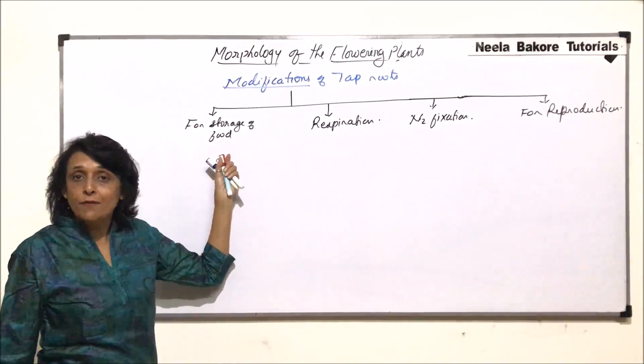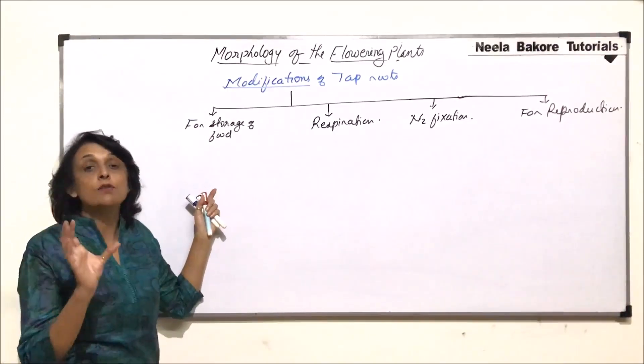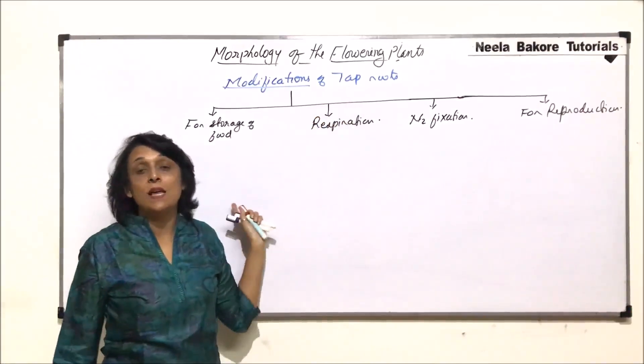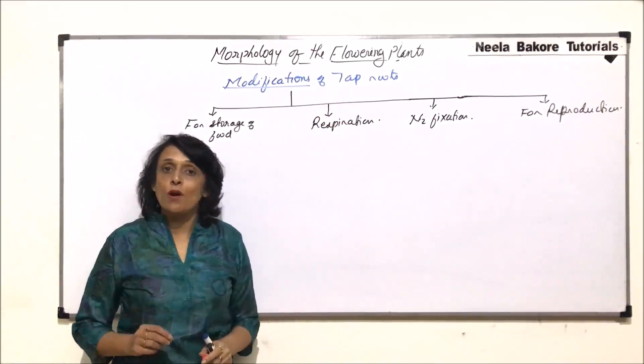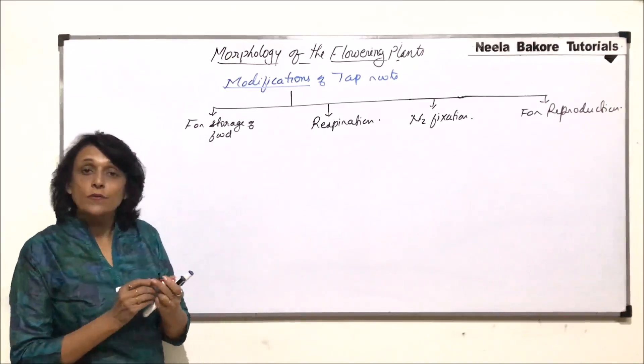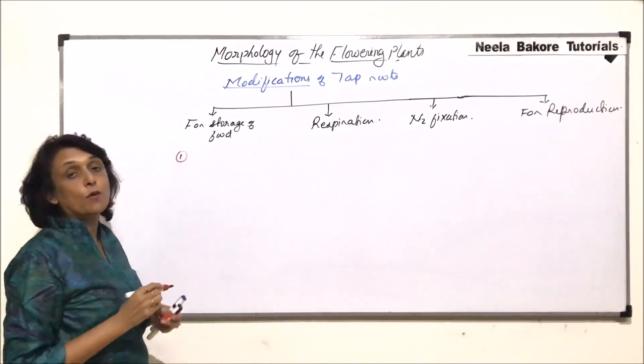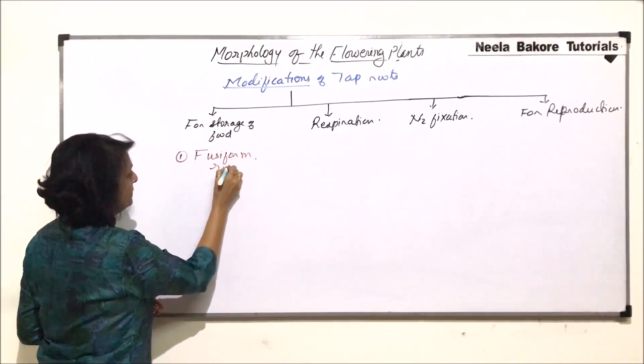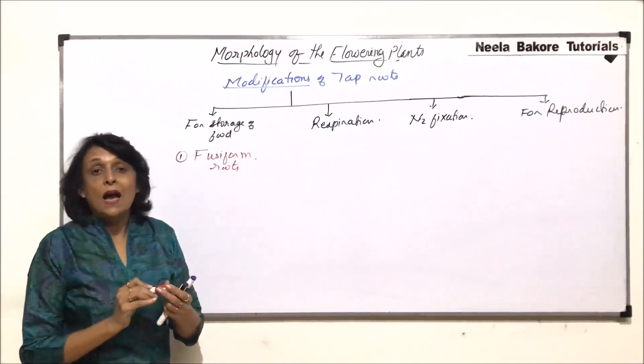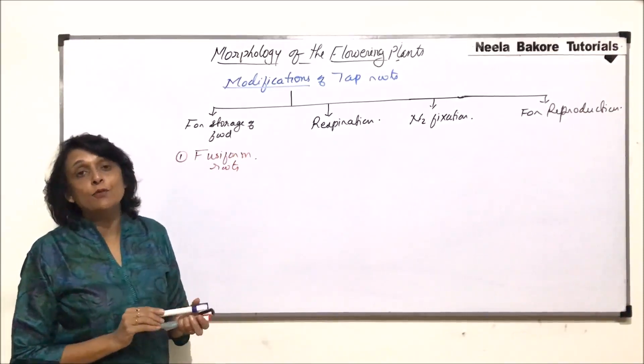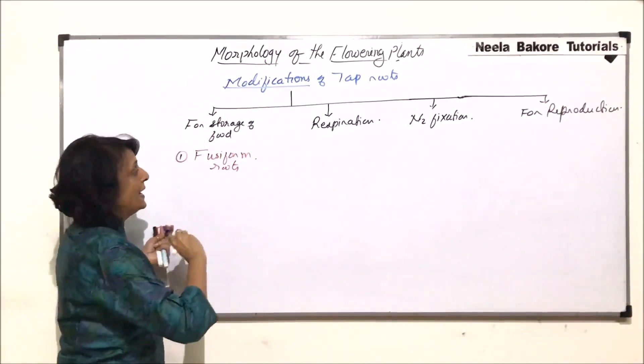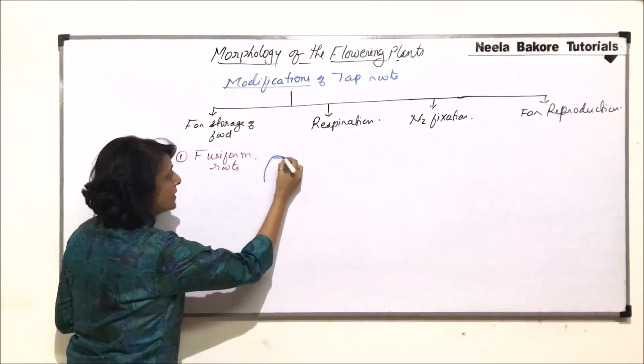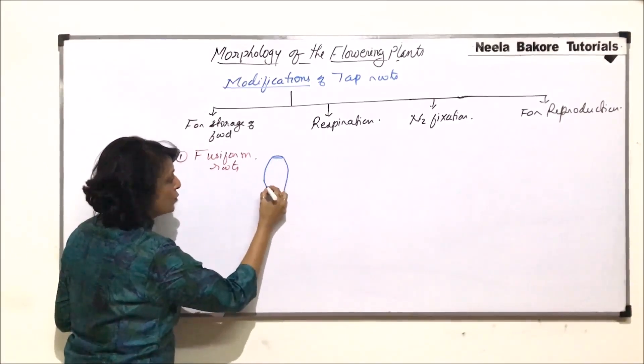If a root is modified for storage of food, then obviously, it is going to be a little swollen because stored food is present. And we are talking of tap root. That means these are all true roots where radical is modified to form that root or radical has given rise to the root. If you are talking about storage of food, the first category we call these roots fusiform roots. Fusiform roots are swollen roots. And if we have to define its shape, then it has a slightly narrower base. It gradually widens in the middle and then tapers towards the tip.